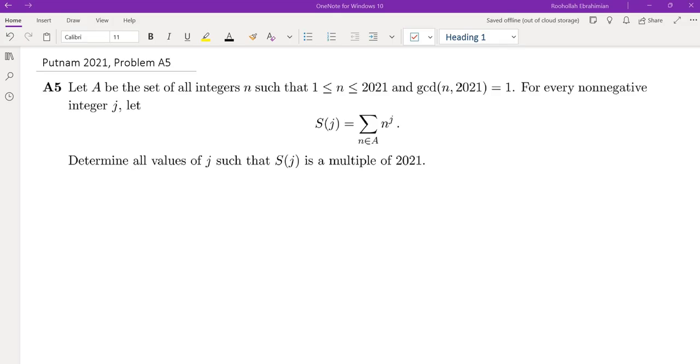Let A be the set of all integers N such that 1 ≤ N ≤ 2021 and gcd(N, 2021) = 1. For every non-negative integer J, we define S(J) to be the sum of N^J when N is in A, and we want to determine all values of J such that S(J) is a multiple of 2021.